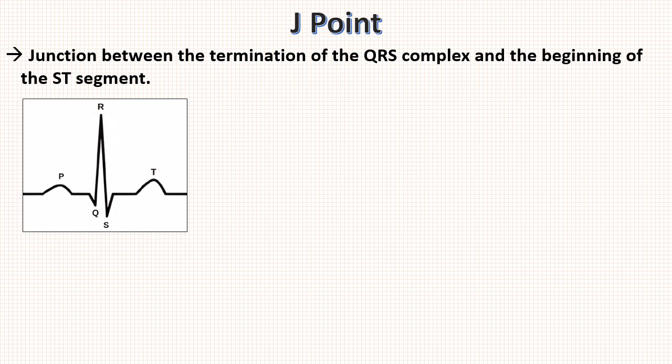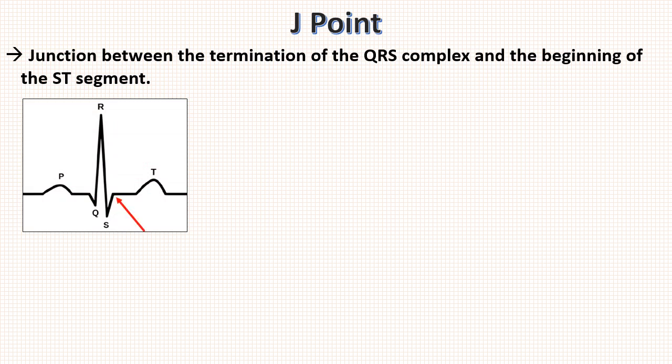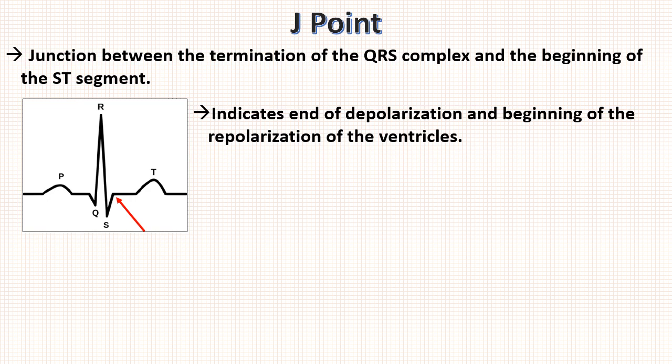Before talking about ST segment, it is important to know about J point. J point is the junction between termination of QRS complex and the beginning of ST segment. It indicates the end of depolarization and beginning of repolarization of ventricles.